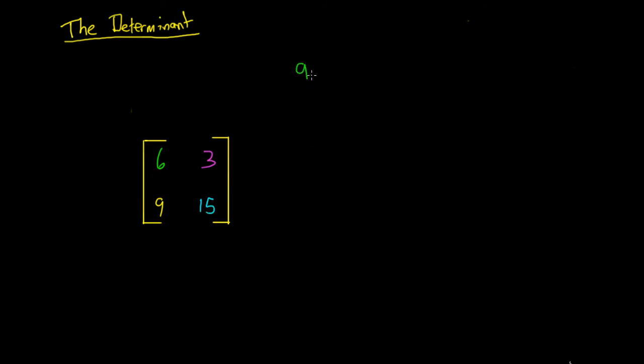So remember our determinant is going to be a multiplied by d minus b times c, and these dots mean multiplication. So the determinant of this matrix is going to be our a which is 6 multiplied by our d which is 15. So we're going to multiply that by 15. We're going to subtract our b. So our b is 3. We've got our b multiplied by our c, and our c is going to be 9.